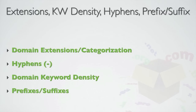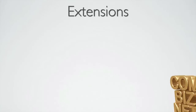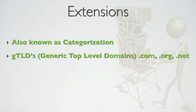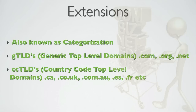Also known as categorization, the domain extension depends on what category the domain falls into. The first level categorization of domain names are top level domains, also known as TLDs, including generic top level domains, GTLDs, such as .com, .net, .org, .info, and .biz. Also falling under TLDs are CCTLDs, which stands for country code top level domains — country specific domains like .ca for Canada, .co.uk for the UK, and .com.au for Australia.